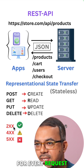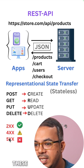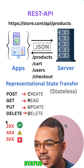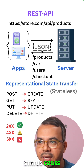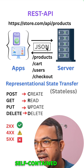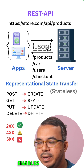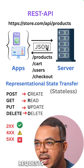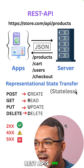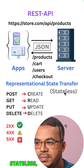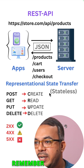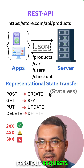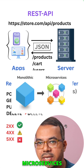For every request, the server also sends status codes along with the response. Each request is self-contained and independent, which enables the server to serve thousands of requests at once. REST APIs are stateless, which means the server does not remember any of its previous requests.